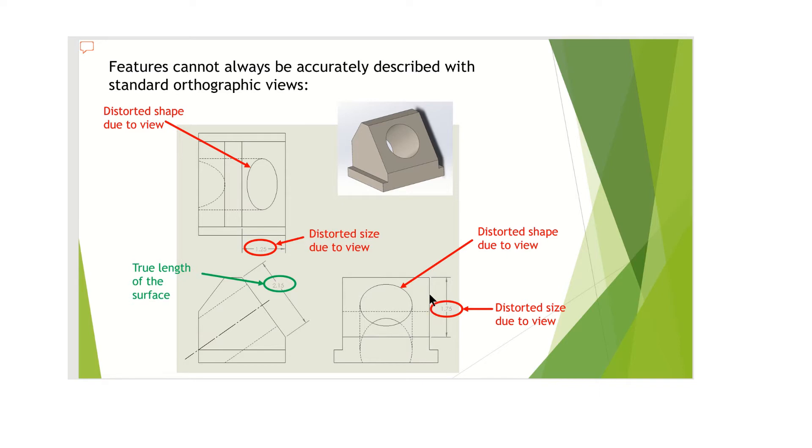The height of that surface is not correct. Same thing with this top view: distorted circle, dimension that's distorted. This is the only view, one of the few views. We could do a bottom view with very little information, and you can see the true size and shape of the part coming from the side, and actually the length of that surface is correct. So this isn't a very good drawing.